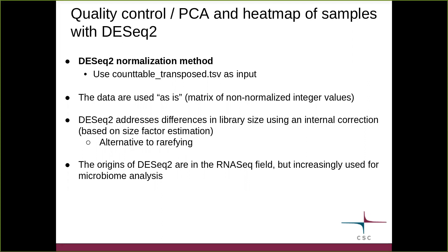The reason why we are using the data as is, is because DESeq2 has this internal correction for library size based on size factor estimation. This provides us with an alternative to rarefying to an equal library size. Rarefying is an approach that was used a lot in the past, but we have found out that there are lots of difficulties associated with that.